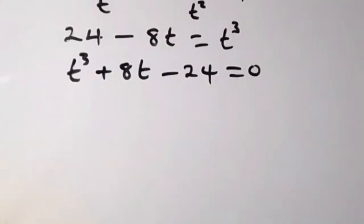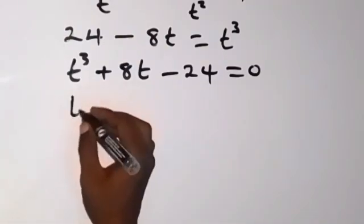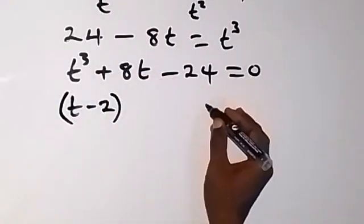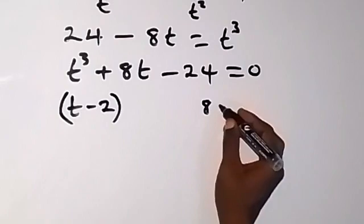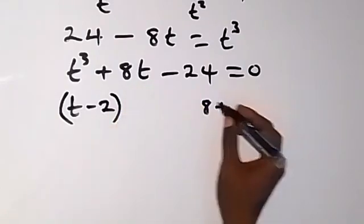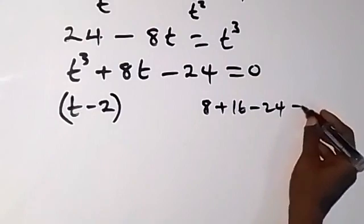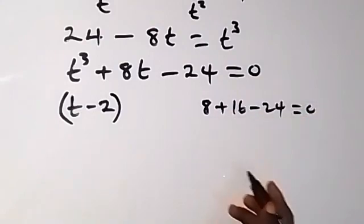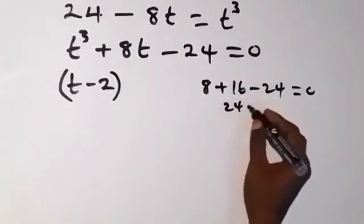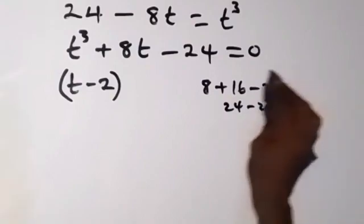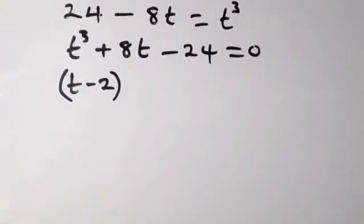When we put t = 2 in, we discover that 2 is a zero of this polynomial. So t = 2 is a zero, and therefore t minus 2 will be a factor. Checking: 2 cubed is 8, plus 2 times 8 is 16, minus 24 gives 8 + 16 - 24 = 0. So 2 is a root, and by the factor theorem t minus 2 is a factor.